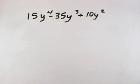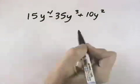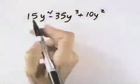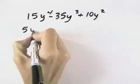In order to factor this polynomial completely, we first want to take out the greatest common factor between these, which is a 5y squared.